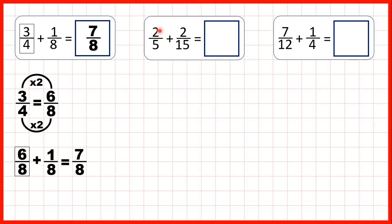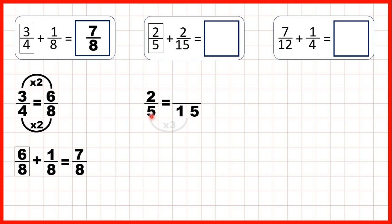Now we have two fifths plus two fifteenths. Fifteen is in the five times table, so to add these fractions we need to find a fraction equivalent to two fifths which has a denominator of fifteen. Five times three is fifteen, and two times three is six.